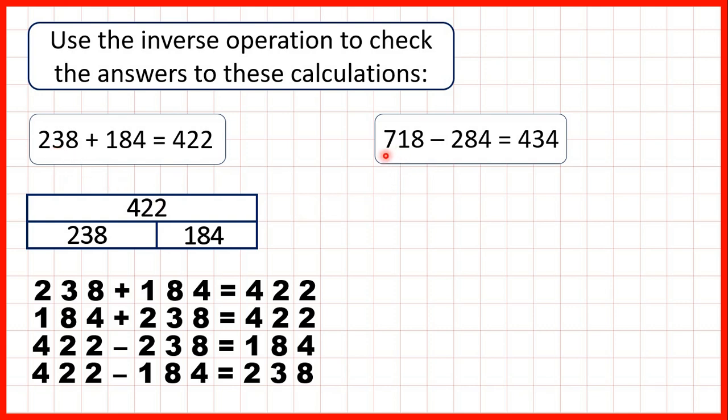So now we have 718 minus 284 equals 434. We can also show subtractions using bar models but this time we're going to have the number that we start with on top and then in the bars below we have the number that we're subtracting and our answer.